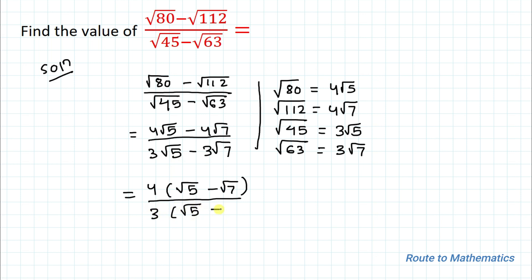In the denominator, both terms have 3 in common, so we take 3 out as a common factor, giving 3(root 5 minus root 7). Since the terms (root 5 minus root 7) in the numerator and denominator are the same, we cancel them out. So the simplified answer is 4/3.